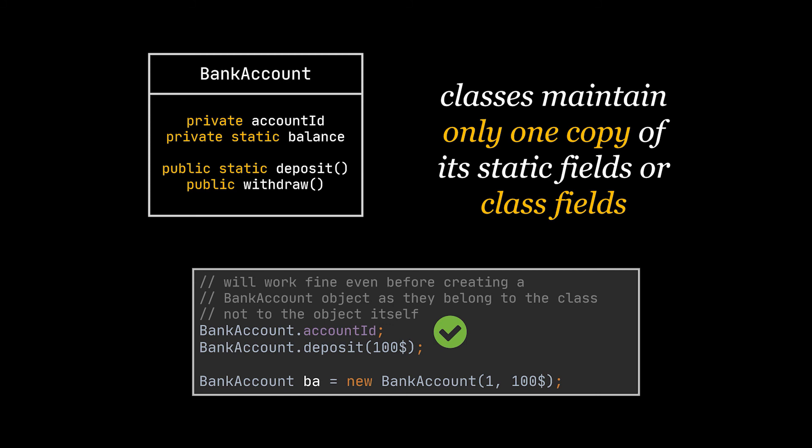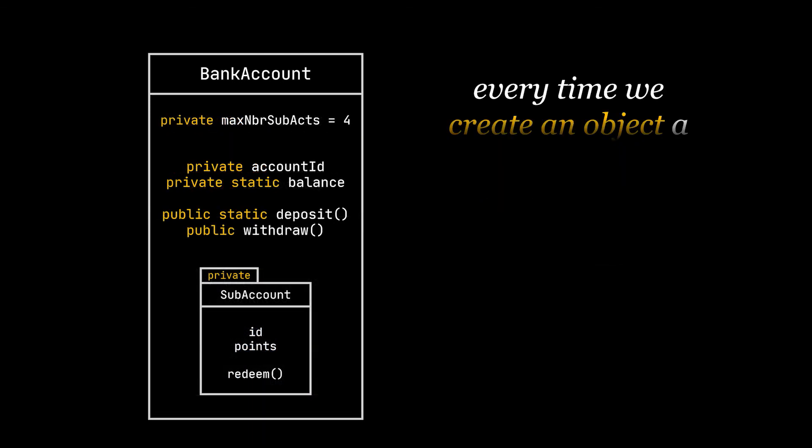You can think of static attributes as global variables. So let's suppose that in our example here we have a variable we need to use named maxNumberOfSubaccounts which is equal to four. And imagine every time we create an object using the BankAccount class, an integer named maxNumberOfSubaccounts equal to four belonging to the object will be created for that object and stored in the memory. What a waste, right?